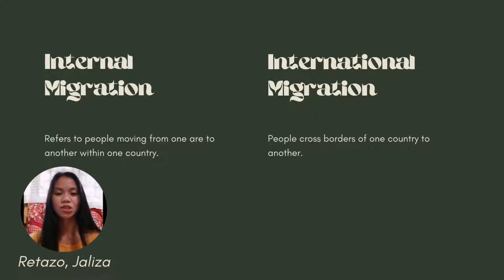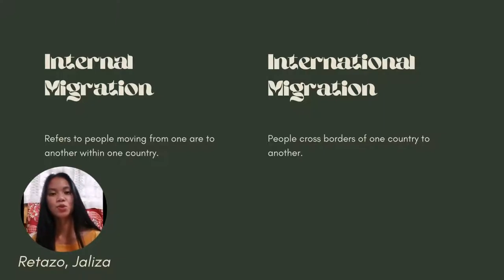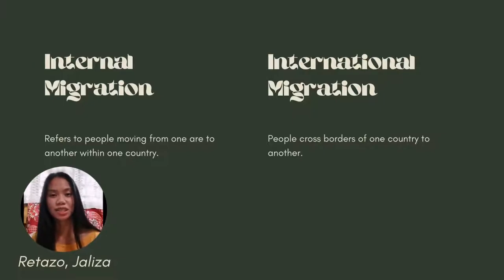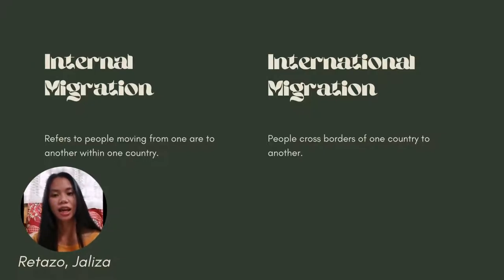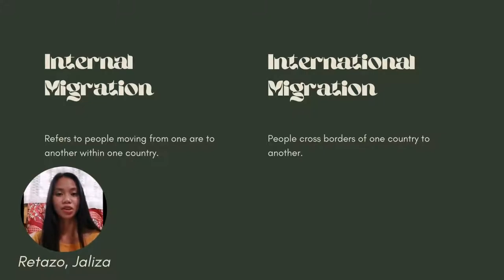International migration refers to a change of residence over national boundaries — meaning crossing from one country to another. For example, Maria from the Philippines moved to the USA, so she is an international immigrant. International migration can be broken down into five groups: immigrants, illegal immigrants, temporary immigrants, petitioned families, and refugees. These five types will be discussed by the next reporters. That's all, thank you.